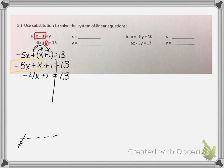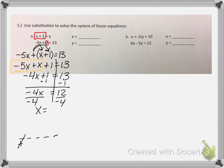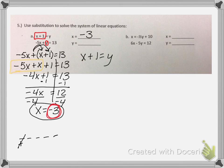I'm trying to get x by itself. There is that constant of 1, so I subtract 1 from both sides: negative 4x equals 12. Then I divide by negative 4 to find what 1x equals. Negative 4 divided by negative 4 is 1x. 12 divided by negative 4 is negative 3. So x equals negative 3. Now I have to figure out what y equals. Using the first equation x plus 1 equals y, I substitute negative 3 for x: negative 3 plus 1 equals y. If I have 3 negatives and 1 positive, I'm left with 2 negatives, so negative 2 equals y.